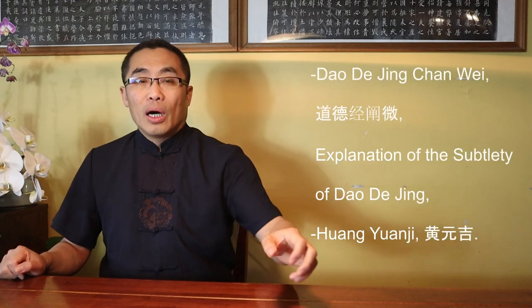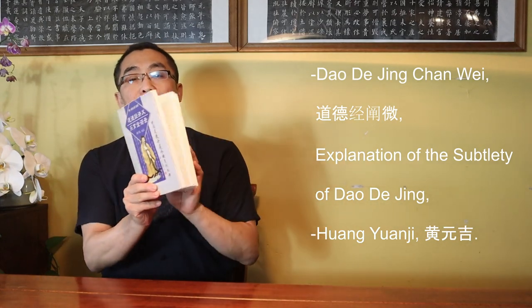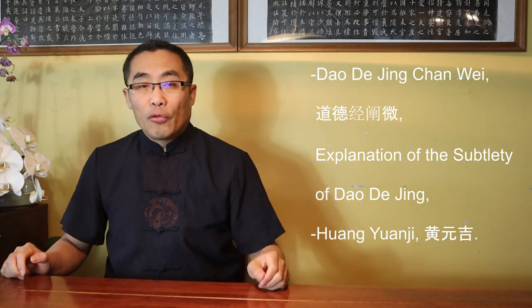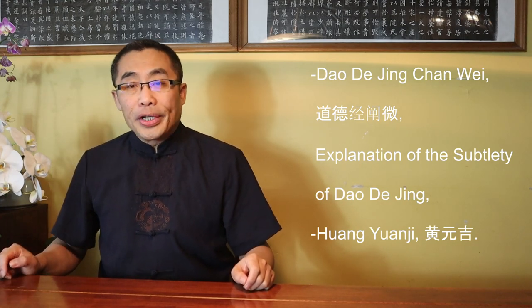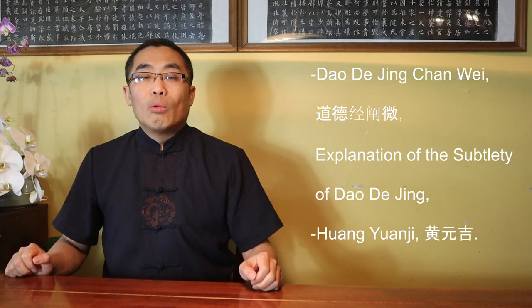In Daoist history, there is one book titled Dao De Jing Chan Wei, or Explanation of the Subtlety of Dao De Jing, which contains the teachings of Huang Yuanji and is actually a commentary on Dao De Jing. This book was edited by Huang Yuanji's students. There have been a few people in history who used the name Huang Yuanji. The one who taught his students Dao De Jing was alive in the middle of the 19th century. However, many people believe he was the same person who was active in the middle of the Yuan dynasty, about 500 years before the middle of the 19th century. I will find a chance to talk about him more in the future.